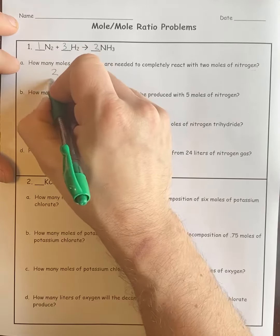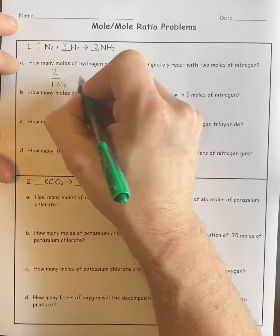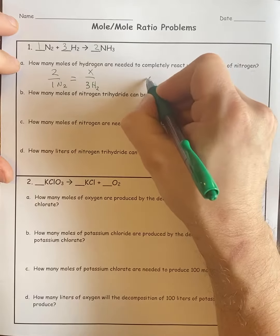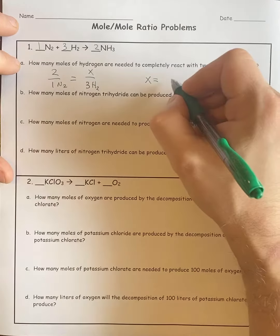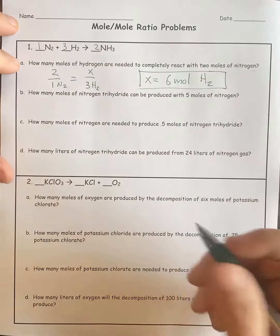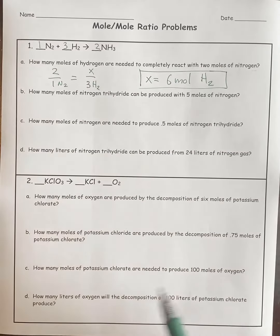I do 2 over 1 nitrogen equals X over 3 hydrogen, cross-multiply, and I get 6 moles of hydrogen. That's pretty straightforward.